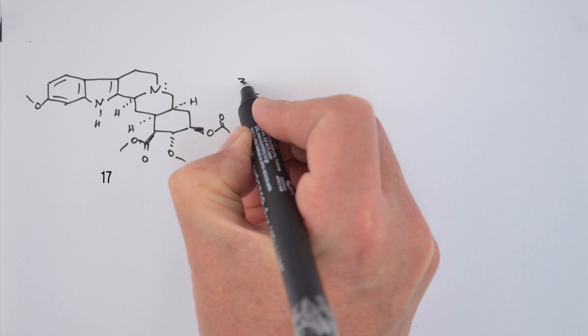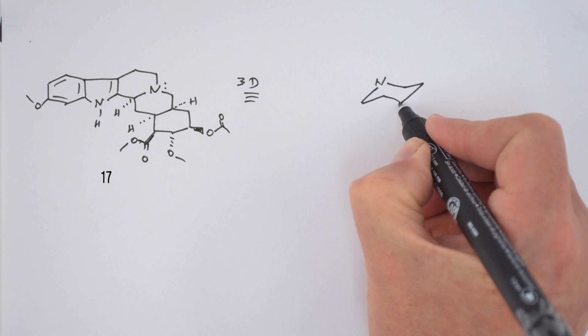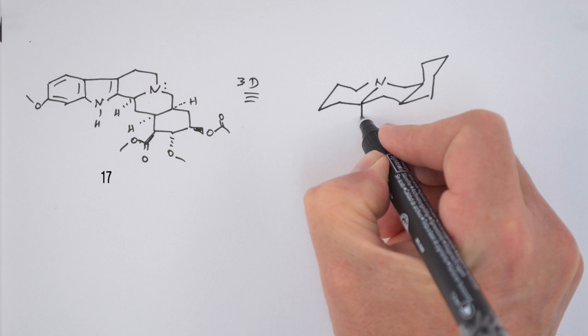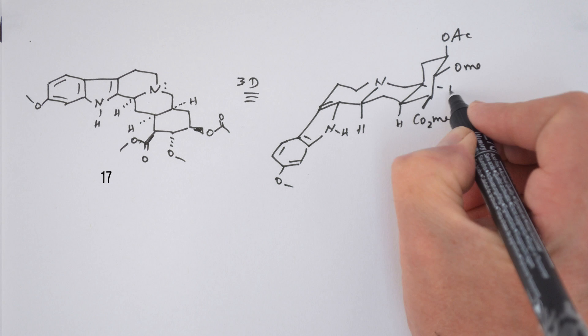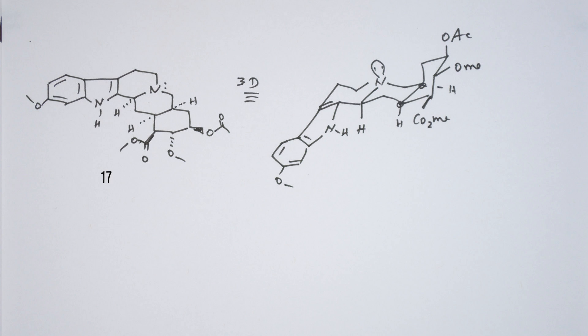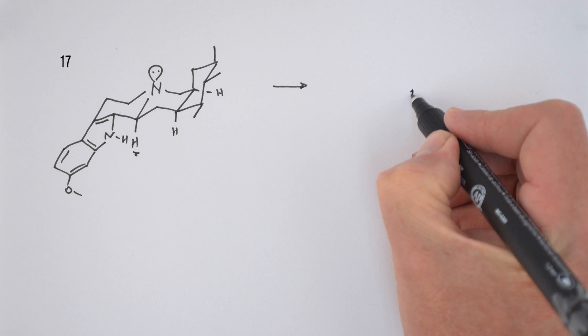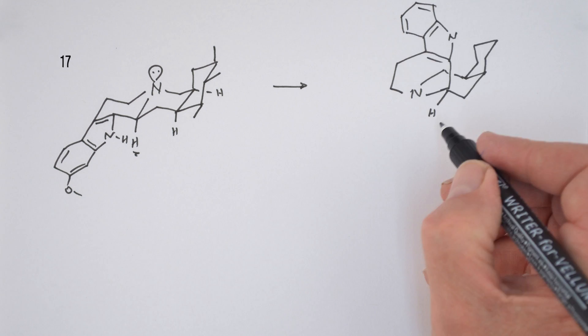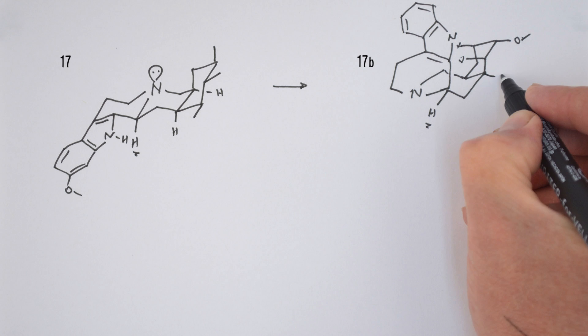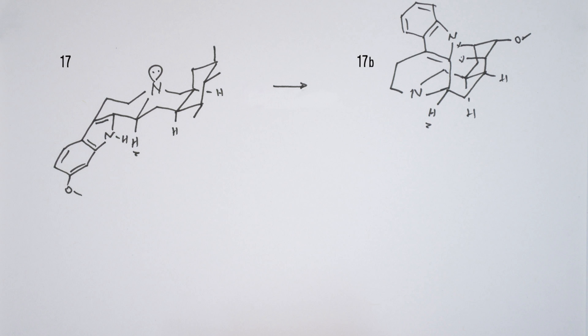To understand how Woodward equilibrated the C3 hydrogen to be up, we need to understand the conformational equilibria available to 17. Its three-dimensional structure looks like the following, where the hydride came in from the bottom to put the lone pair on top yielding a trans-CD ring junction. This conformation is in equilibrium with conformation 17b where the C3 hydrogen is still down but equatorial. Because ring D has inverted, ring E has to invert and this puts the three substituents axial. Clearly this conformational equilibrium lies to the left.